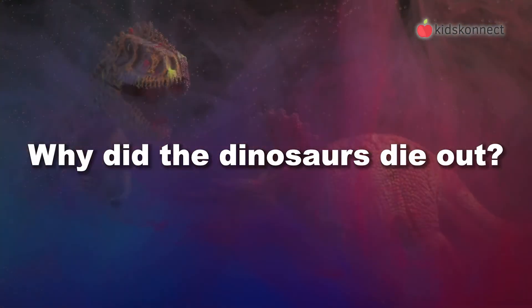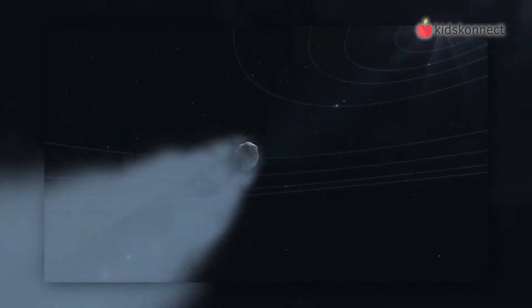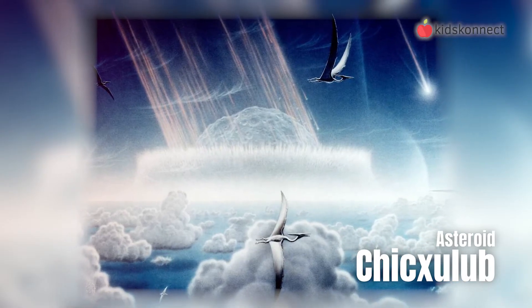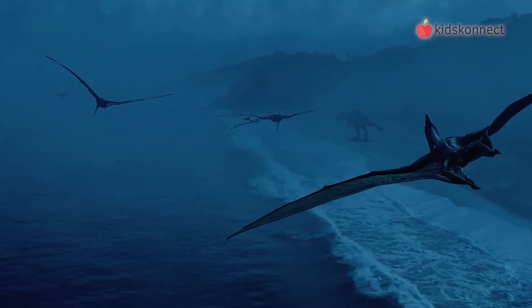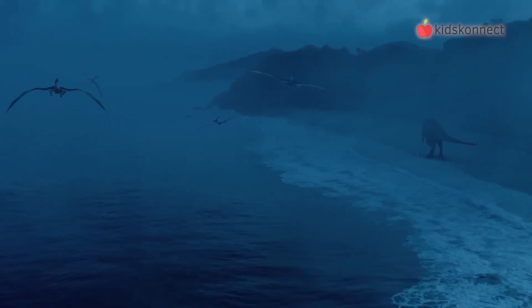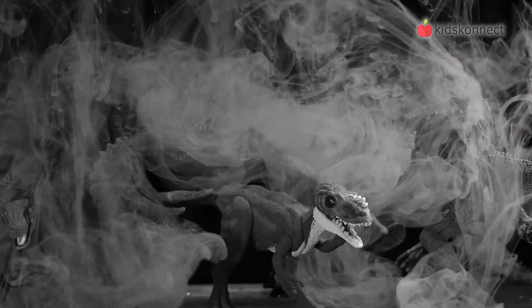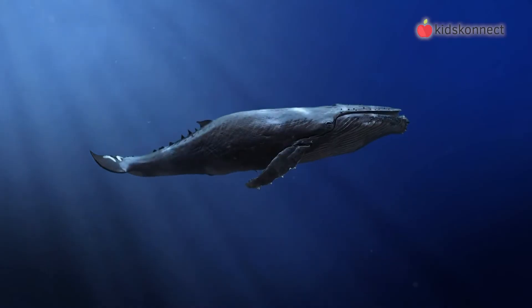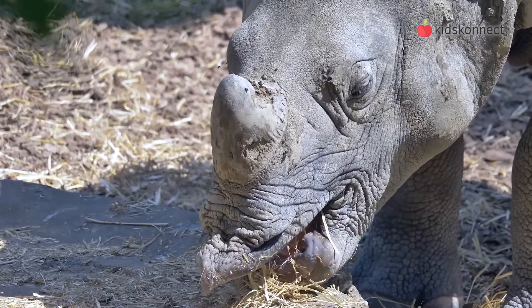Why did the dinosaurs die out? There are a few theories, but the most popular is that a massive asteroid hit the earth. Located in the waters of Mexico is a crater where a six-mile-wide asteroid, called Chicxulub, hit the earth 66 million years ago. It had more than four and a half billion times the energy of an atomic bomb, which killed millions of dinosaurs instantly. After that, runaway climate change from ash and dirt thrown into the atmosphere meant many species couldn't adapt quickly enough. The earth became very cold and dark, plants died, and 75% of all dinosaur species went extinct. Just like dinosaurs emerged after the mass extinction of the Paleozoic Era, mammals were able to emerge when the Mesozoic Era ended. They thrived because they were warm-blooded and had very little competition for food and habitat.